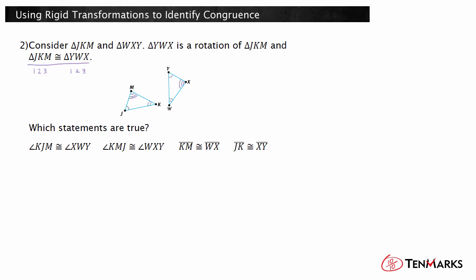We can also identify the congruent sides by looking at pairs of letters in the same position. From this we can see that angle KMJ is congruent to angle WXY and that line KM is congruent to line WX because they are corresponding parts of two congruent triangles. We cannot say the other two statements are true.